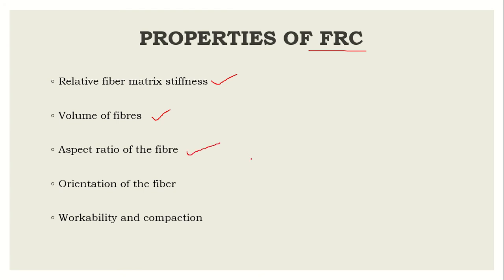The third property is aspect ratio. As discussed, aspect ratio is L by D. It is found that up to an aspect ratio of 75, strength and aspect ratio are directly proportional. Once the aspect ratio exceeds 75, they become inversely proportional — more aspect ratio means less strength.